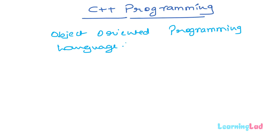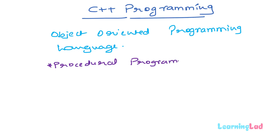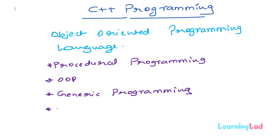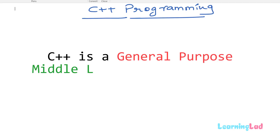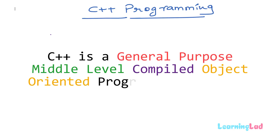The next term is object oriented programming language. C++ uses a programming approach called the object oriented programming approach, so it is called an object oriented programming language. In C++ we can do four types of programming: procedural programming, which is the way we program using the C language; object oriented programming; generic programming using templates; and functional programming, which is newly added to C++. So C++ is a general purpose, middle level, compiled, object oriented programming language.